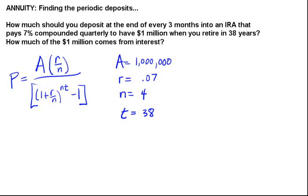So here are the values we're going to need. We know that the final value should be a million dollars. We know our interest rate is 7%. I'm going to type this in as a decimal, so .07. Our money is being compounded quarterly, every three months, so n is 4. And our time is a total of 38 years.